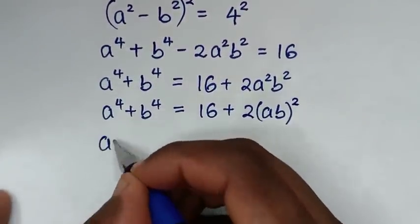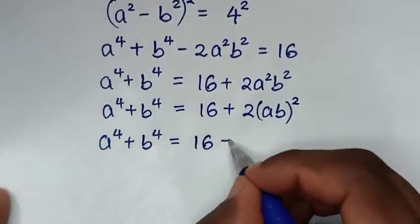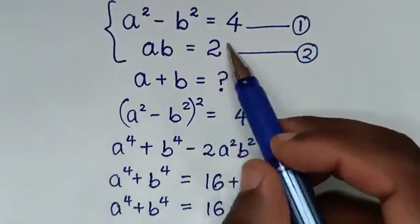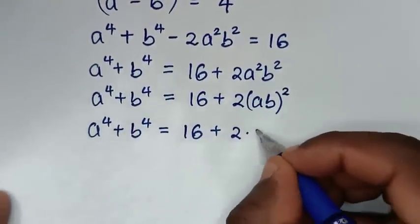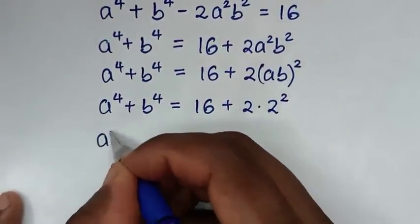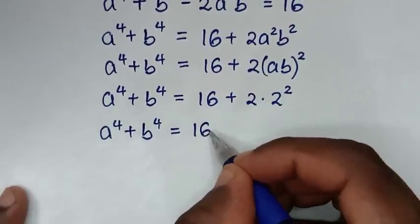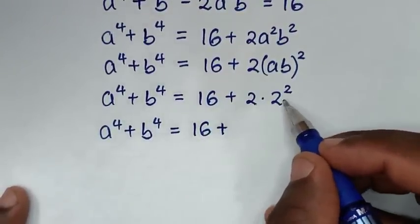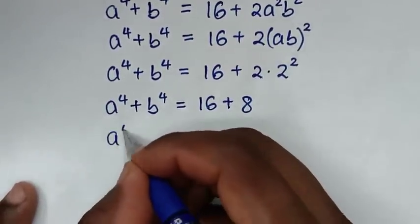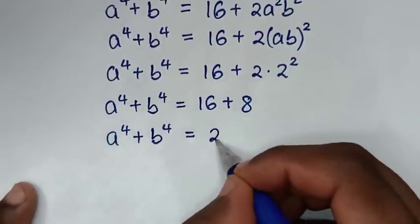So a⁴ plus b⁴ equals 16 plus 2(ab)². From equation 2, ab equals 2, so we substitute: 2 times 2 squared equals 2 times 4 equals 8. Therefore a⁴ plus b⁴ equals 16 plus 8, which is 24.